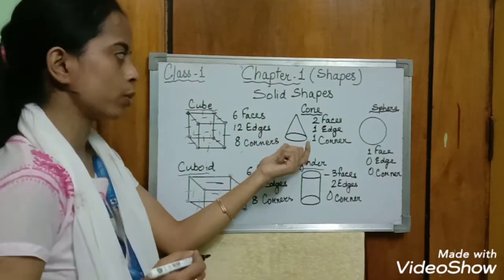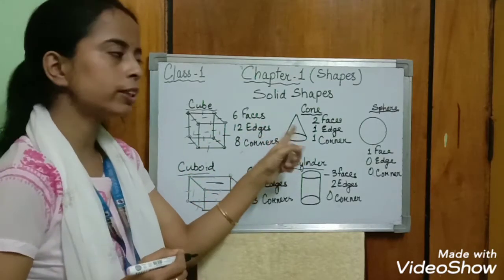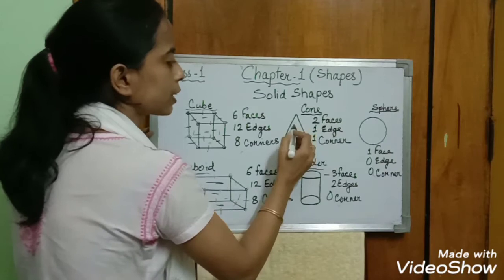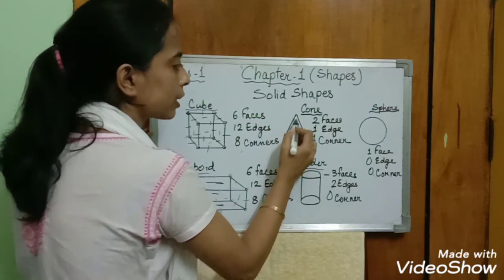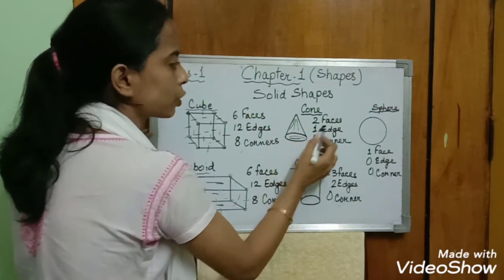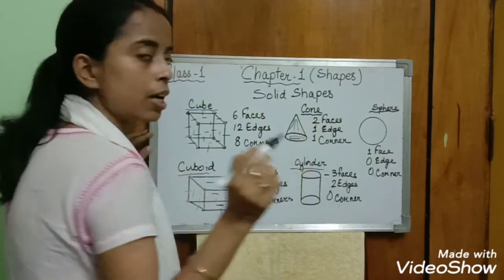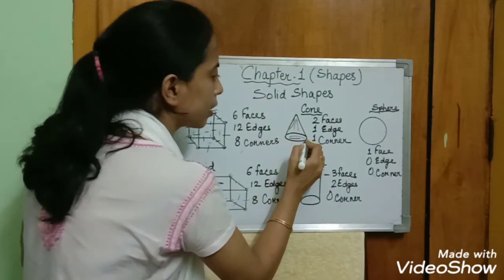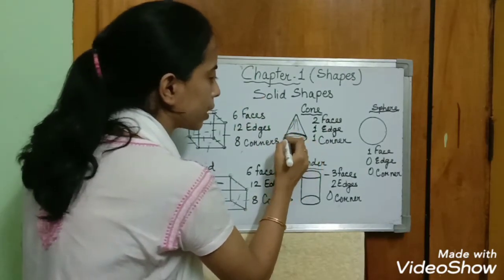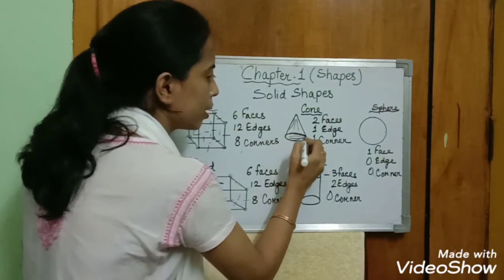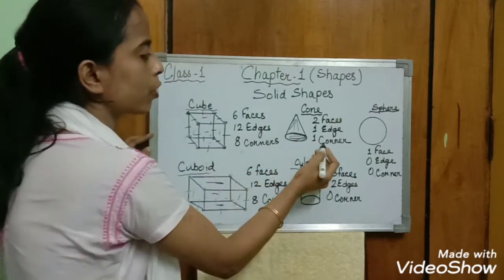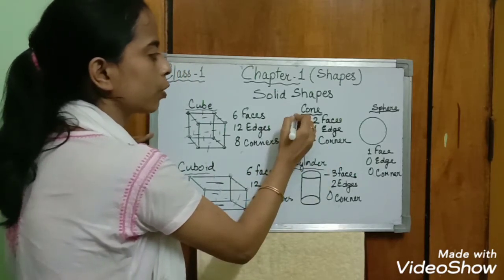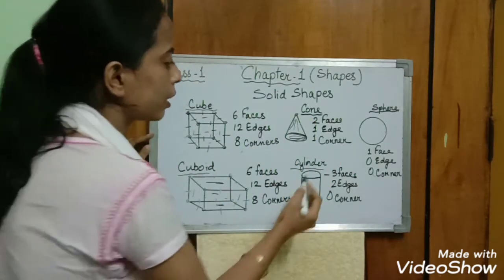Now come to cone. Cone has two faces — this flat face is one, and the curved surface is two. How many edges? Only one — that is a curved edge. And how many corners? Cone has one corner — the tip at the top.